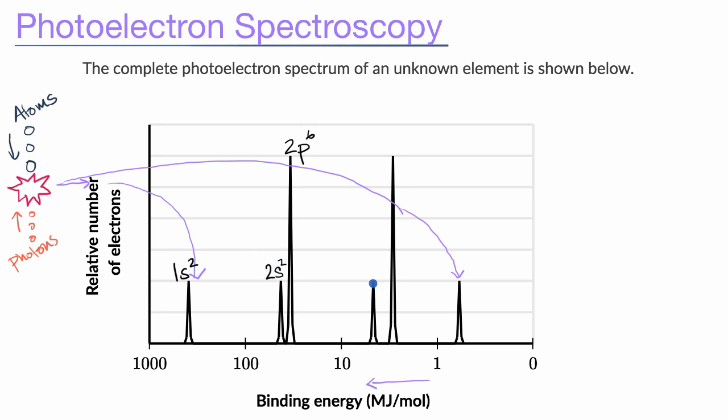So this next spike is going to be the next highest energy shell, which is going to have a lower binding energy. It's easier to knock those electrons off. And so this looks like it's going to be the 3s2. And then this next spike, this looks like 3p6. And then that one gets completely filled, and we have one more spike after that.